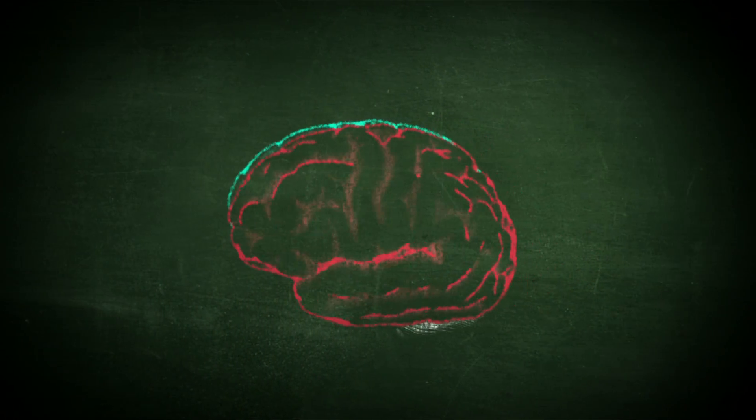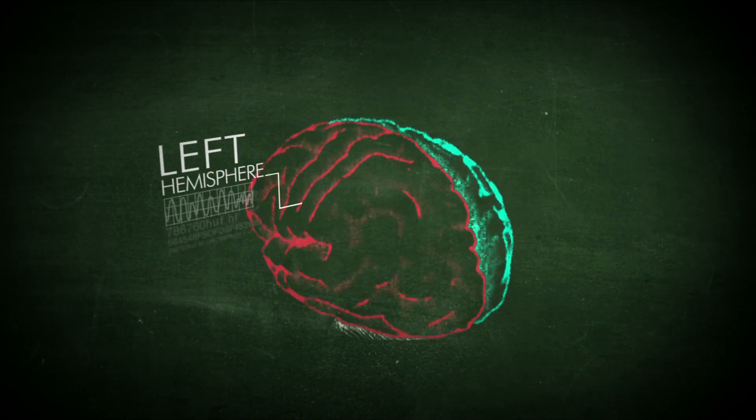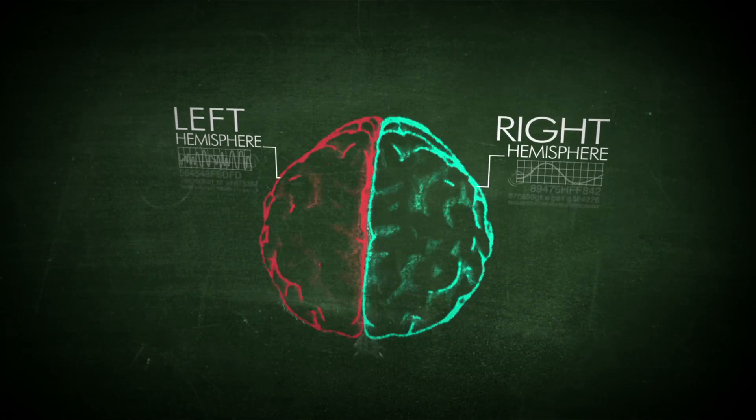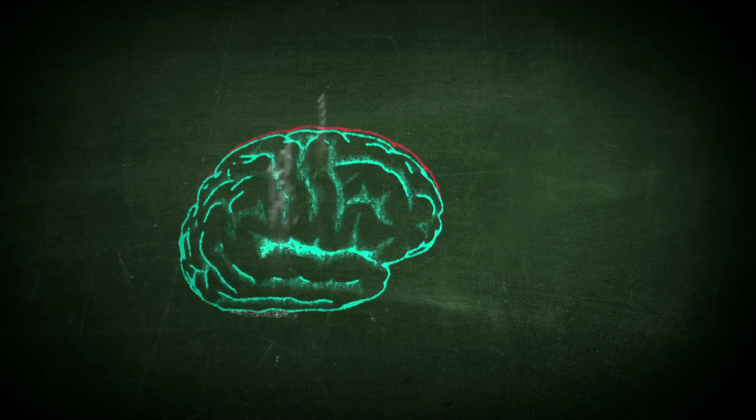divided into two hemispheres, the left and the right. Each side processes reality in a different way. The left side thinks in words and the right hemisphere thinks in images.